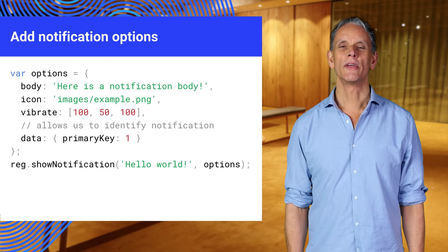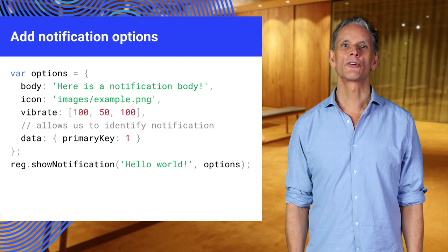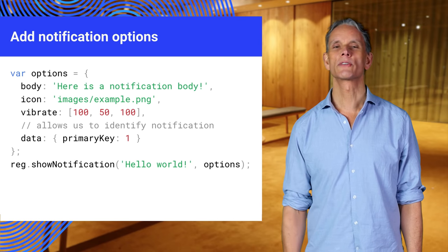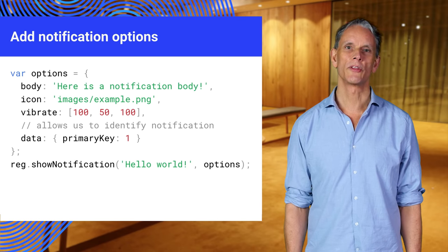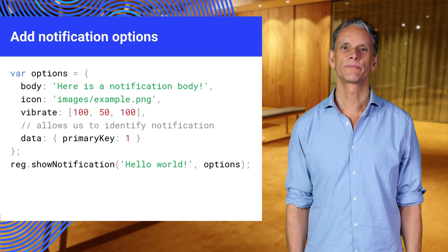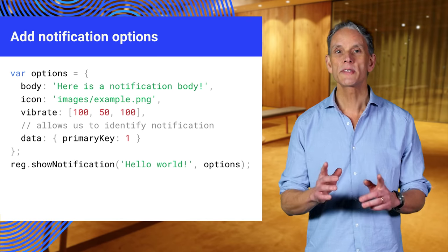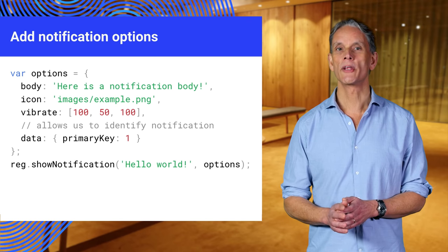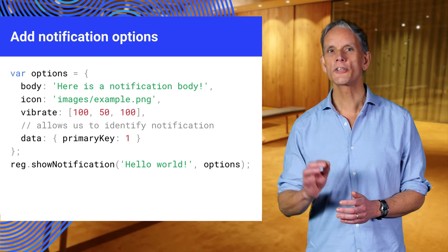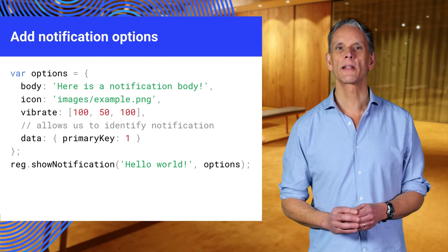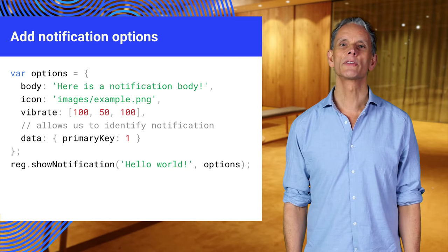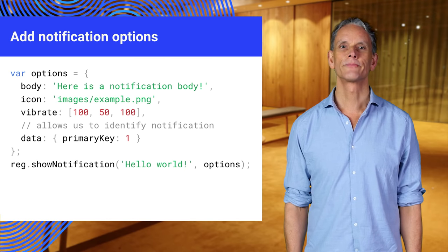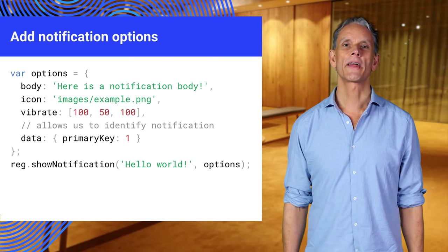Data is the arbitrary data we can retrieve in the service worker when the user interacts with the notification. In this example, a primary key property allows us to identify which notification was clicked when handling the interaction in the service worker. Let's try that out.